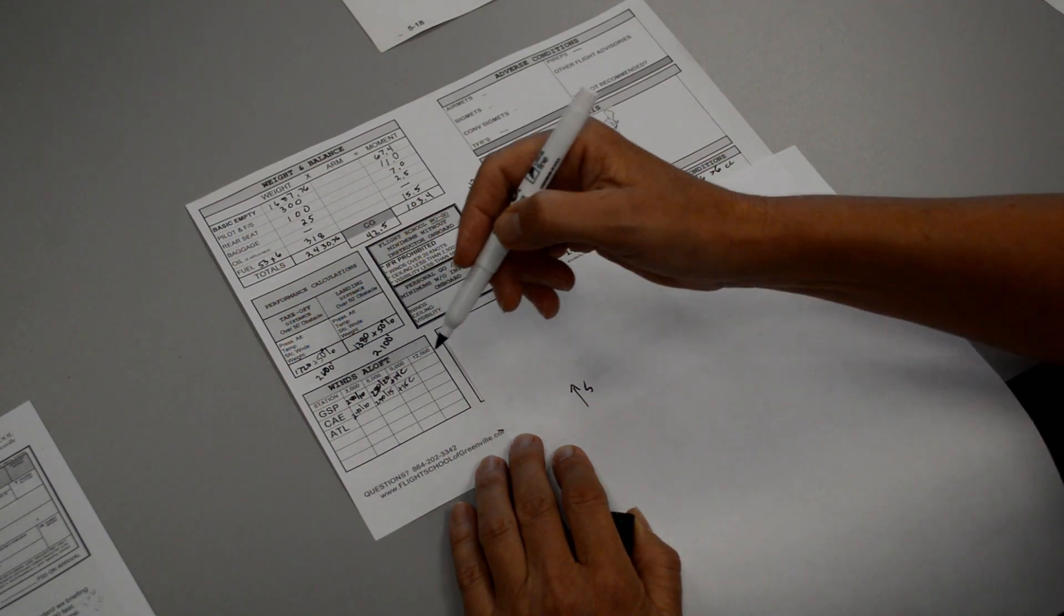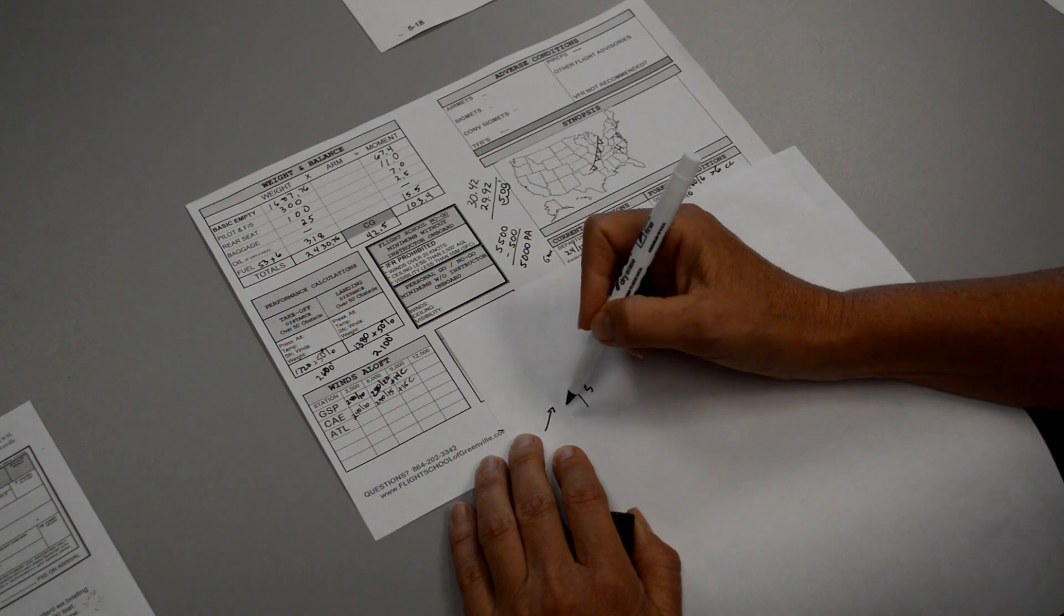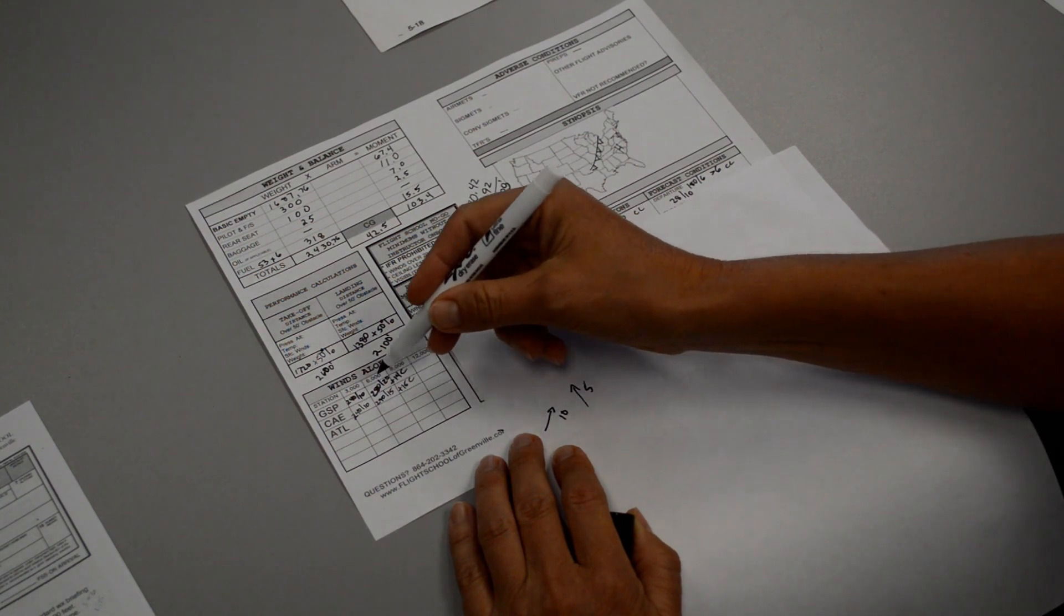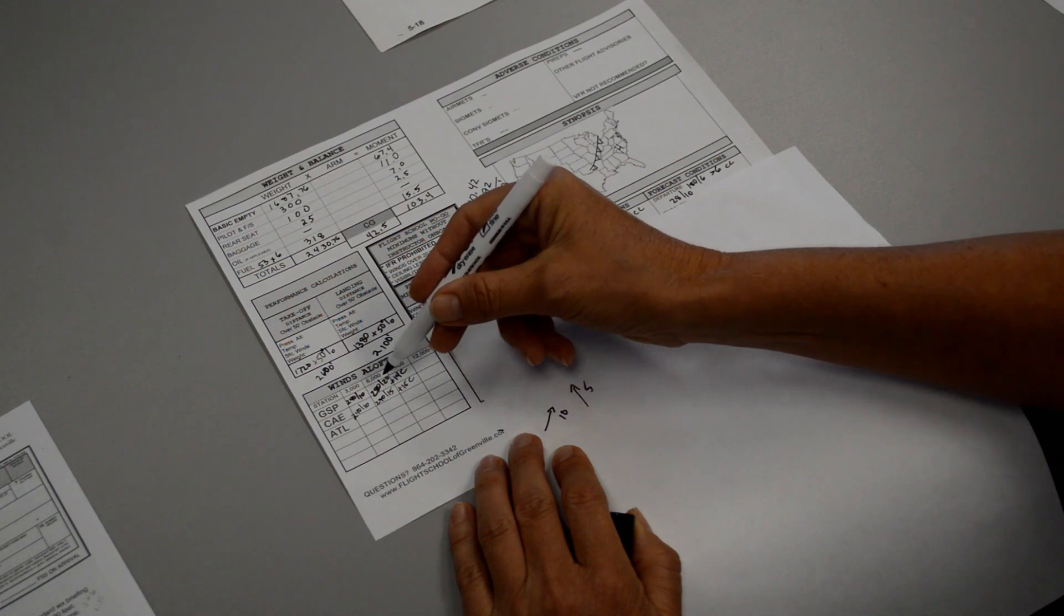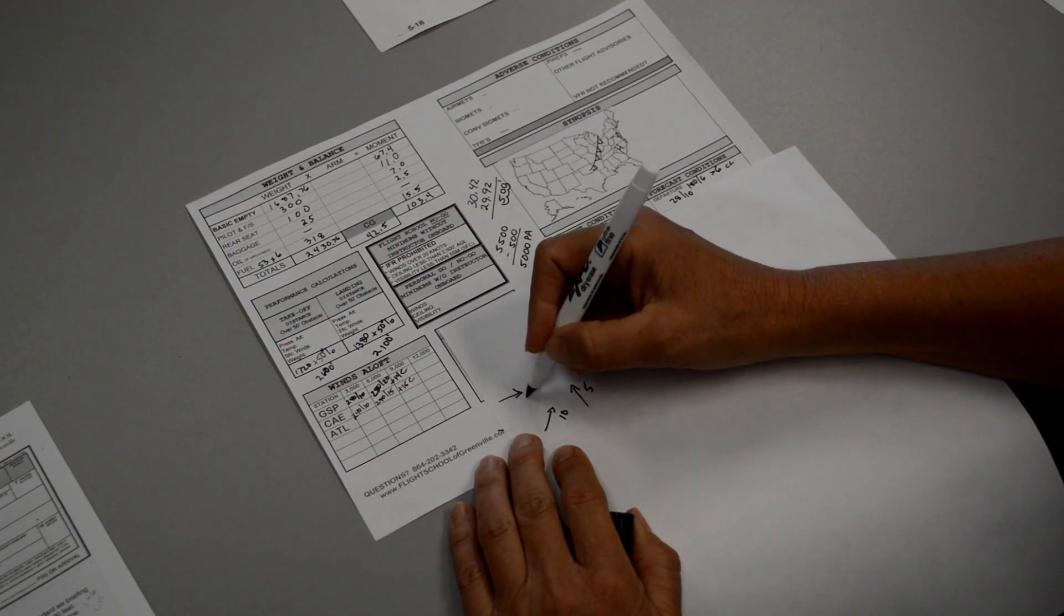At 3,000 feet, the winds are coming out of 240 at 10 knots. And finally, as we get closer to the altitude we want to fly at, the winds are coming out of 280 at 20 knots.